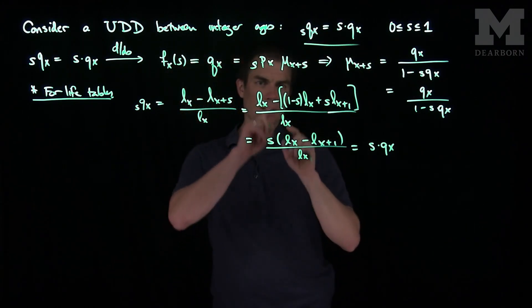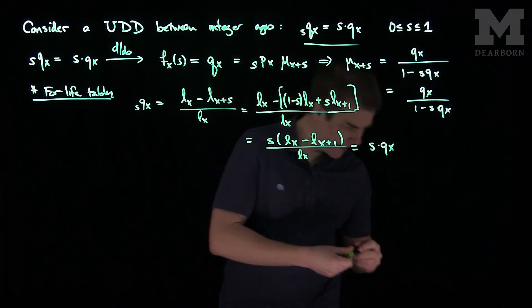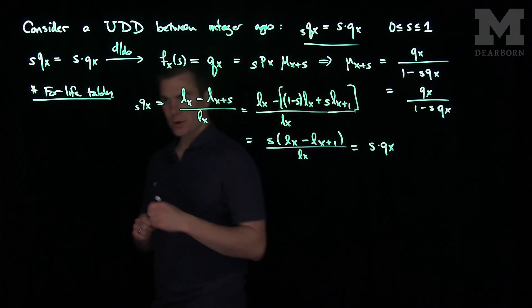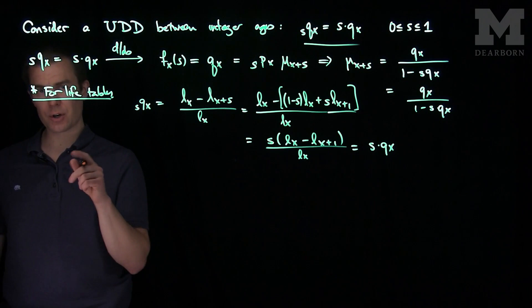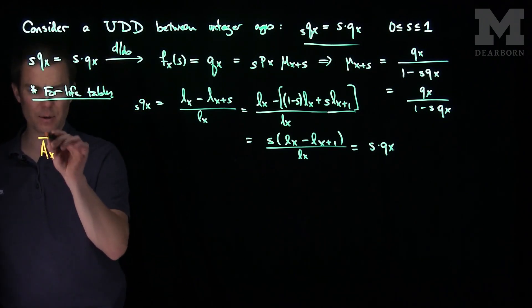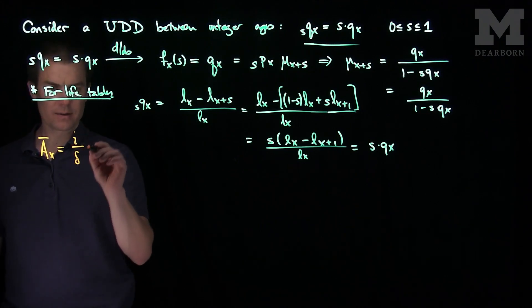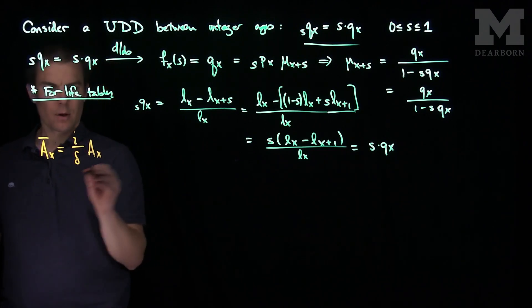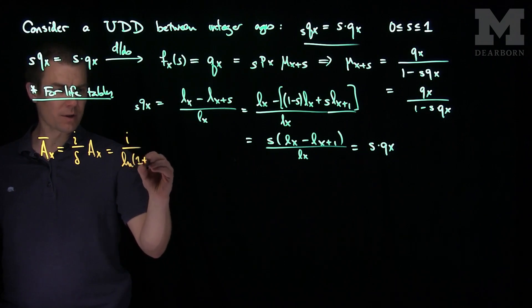This is in agreement with the UDD assumption — this statement is equivalent to the fact that you interpolate linearly between different life table elements. Now there are several important relationships for insurance products. We can compare continuous insurance to whole life insurance by the following relationship: A_x bar equals (i over delta) times A_x, which we can write as i over log(1+i) times A_x.